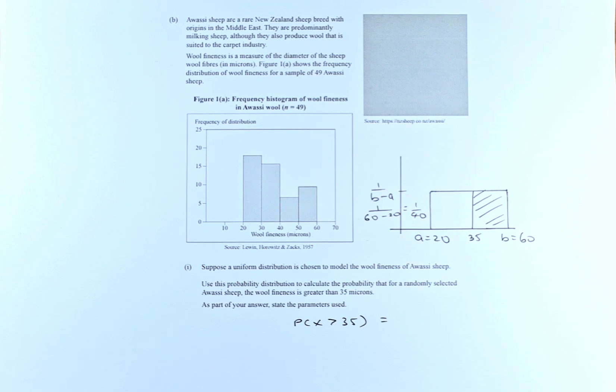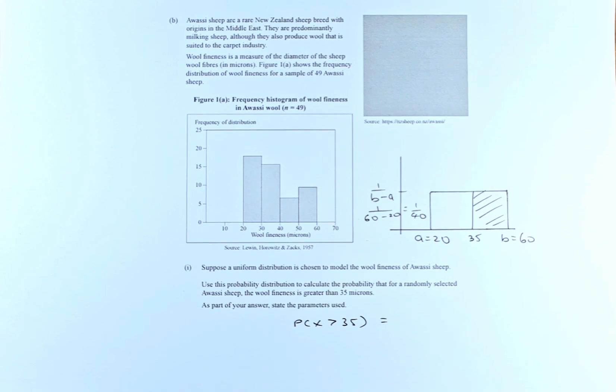So this is a histogram. The question tells you suppose a uniform distribution is chosen. A uniform distribution is the same as a rectangular distribution to model the wool fineness of the Awasi sheep. Use this probability distribution to calculate the probability that a randomly selected Awasi sheep, the wool fineness is greater than 35 microns. As part of the answer, state the parameters used.